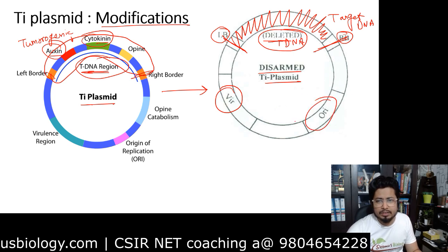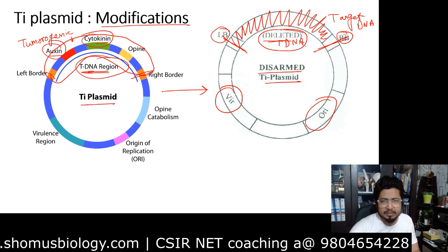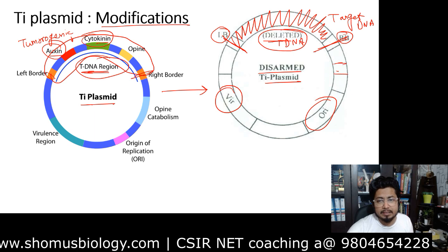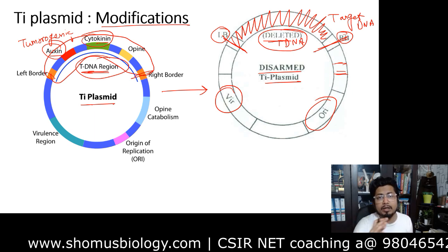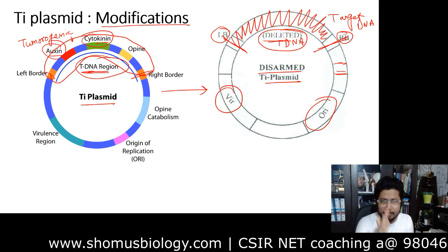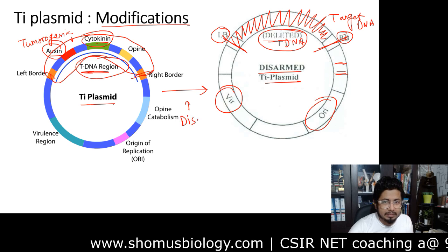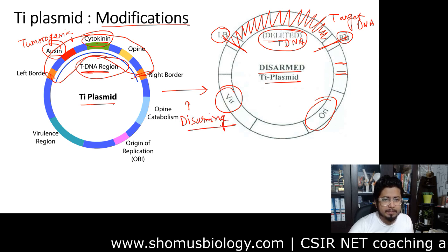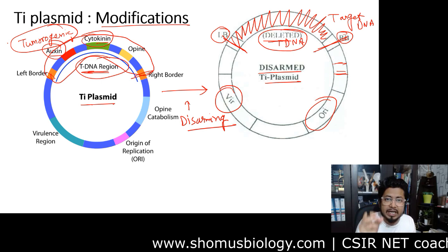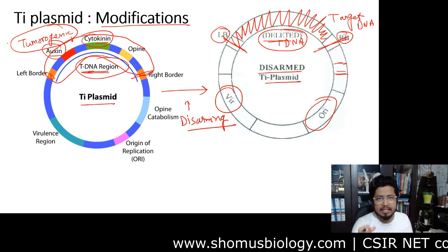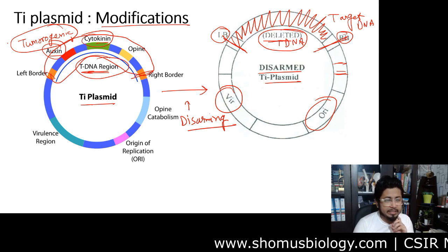The origin of replication remains, and we add a multiple cloning site somewhere in the T-DNA region portion. We also add a selectable marker so we can screen and select the recombinant plasmid. These are the modifications we do to the natural Ti plasmid. The most important modification is disarming - we cleave out the tumorigenic portion of the Ti plasmid and instead attach the target DNA so that the vir gene products will guide the target DNA from the bacterial cell into the plant cell.